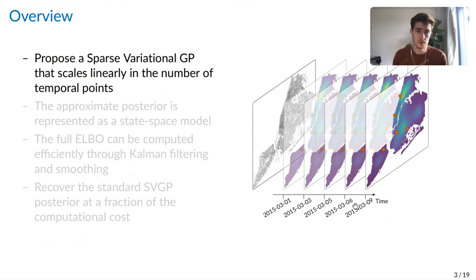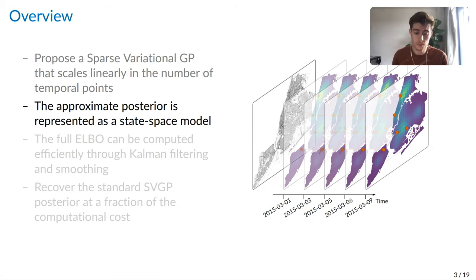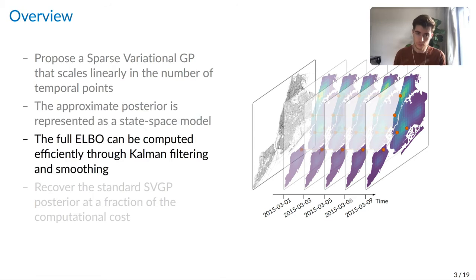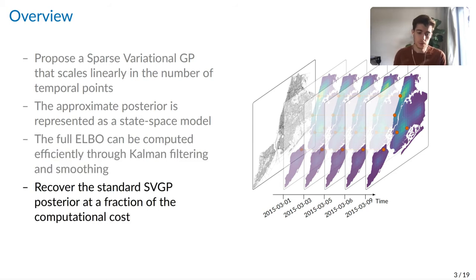In this work we've developed sparse variational GPs that scale linearly with the number of temporal points. We do this by placing the inducing points on a spatial-temporal grid and represent the approximate posterior as a state-space GP model. We then show that the full variational lower bound, the ELBO in this case, can be computed as a byproduct of running efficient Kalman filtering and smoothing algorithms. We show that this recovers the standard SVGP posterior at a fraction of the computational cost, allowing us to use many more inducing points.